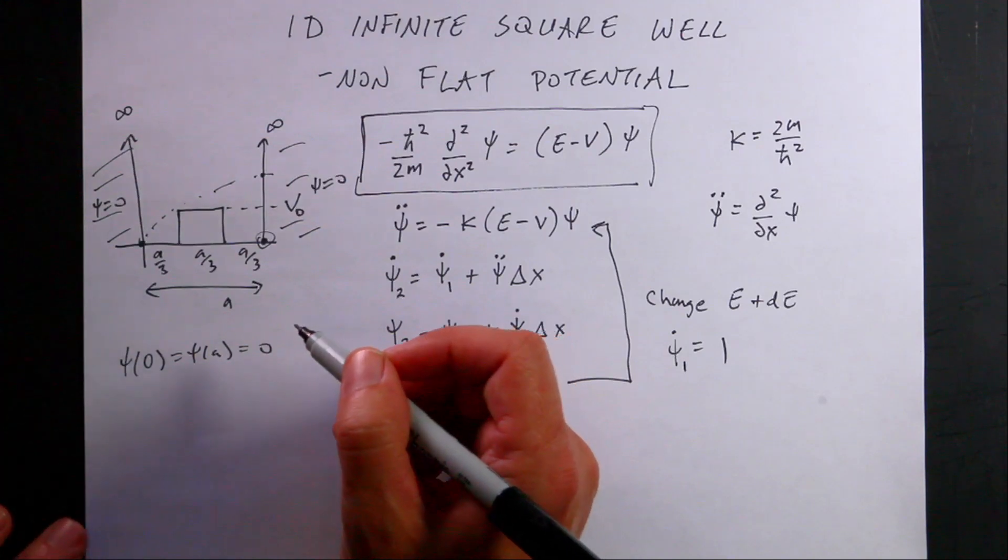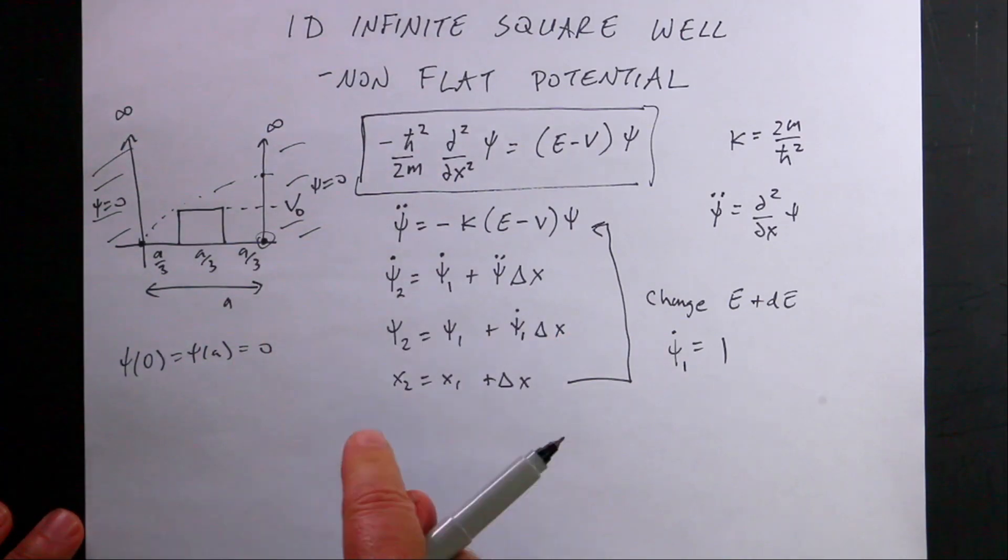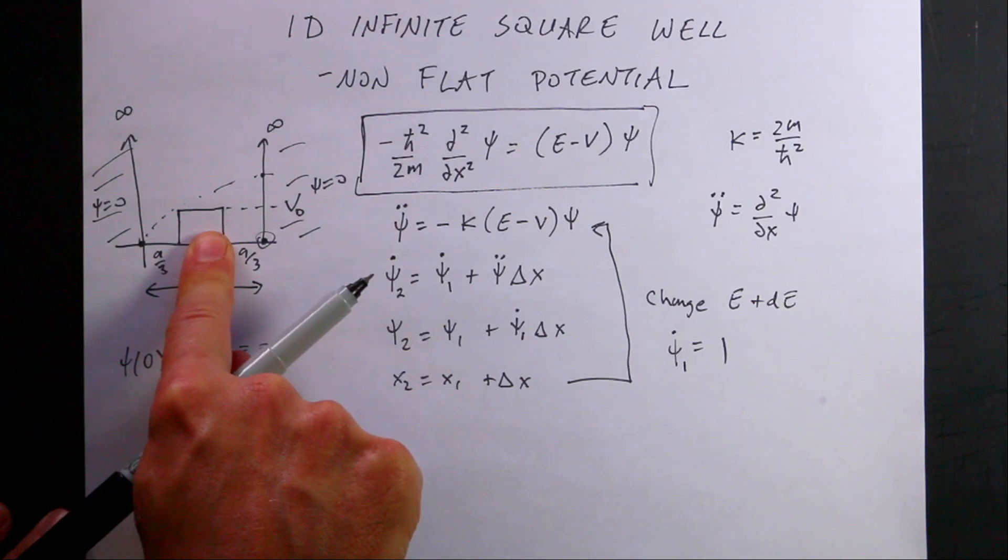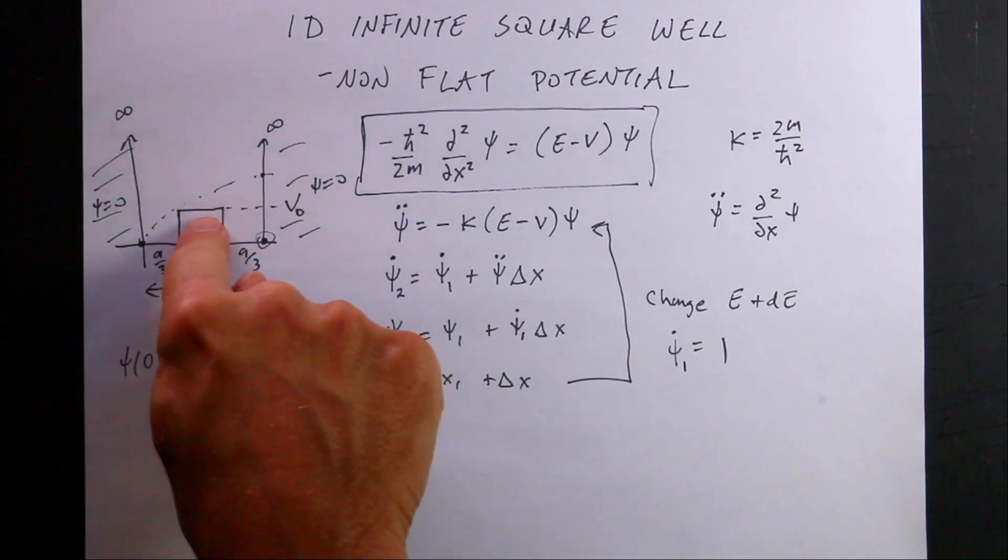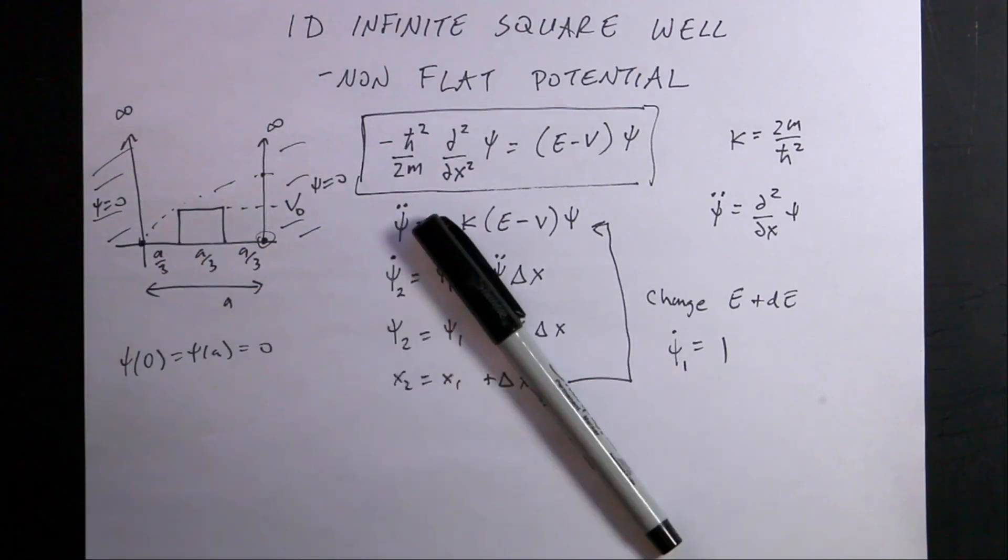Now what's different in what I'm going to do here is nothing different except that my potential is not zero the whole time. So let me go over to the code. Show you the code. We're going to modify the code. Add that bump in there. And then we're going to see what happens.